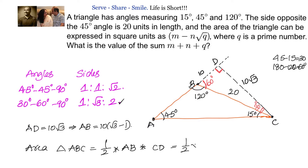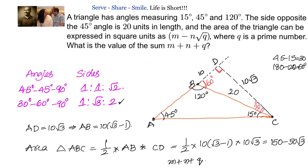We have the altitude CD waiting for us. So we write: area = half × 10(√3 − 1) × 10√3. Simplifying, we get 150 minus 50√3, which is in the form M minus N root Q. So the value of M plus N plus Q is 150 plus 50 plus 3, which equals 203.